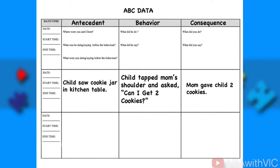Here's another example. The antecedent is the child saw a cookie jar on the kitchen table. The behavior was the child tapping mom's shoulder and asking 'can I get two cookies?' The parent responded by giving the child two cookies. This data shows the behavior is actually appropriate — you can take data on appropriate behavior, not just maladaptive behavior. The function of this behavior is access to tangibles.